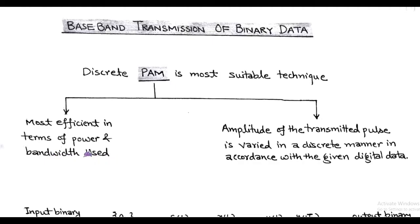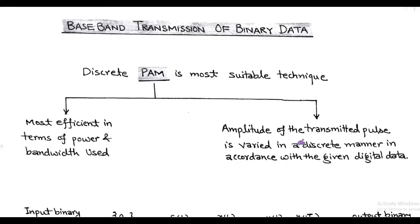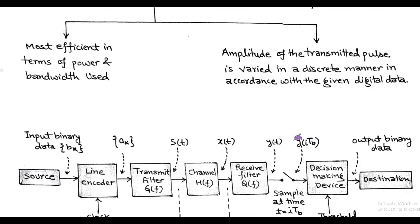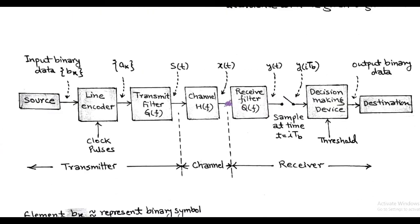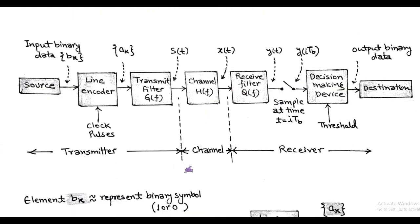In this method, the amplitude of the transmitted pulse signal is varied in discrete form in accordance with the given digital data. The typical block diagram of a binary baseband transmission system is shown in the figure.